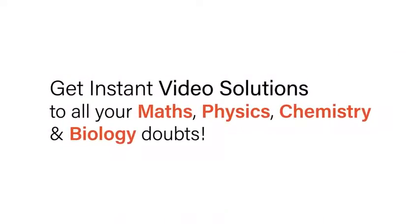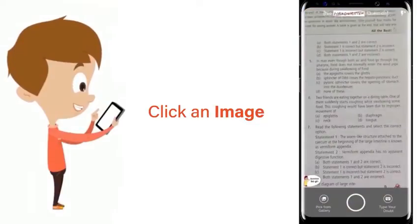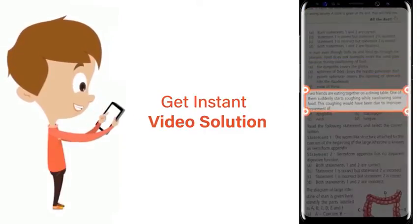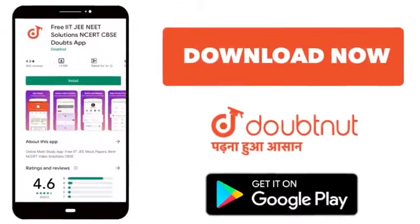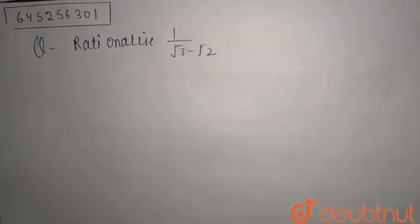With Doubtnet, get instant video solutions to all your maths, physics, chemistry and biology doubts. Just click the image of the question, crop the question, and get instant video solution. Download Doubtnet app today. Hello students, so today's question is rationalize 1 by root 3 minus root 2.